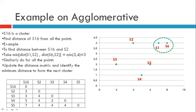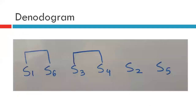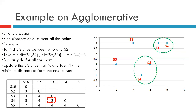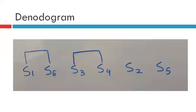This is our updated distance matrix, and the minimum distance identified here is the distance between sample points s3 and s4. So s3 and s4 will form the next cluster. This is our updated dendrogram.